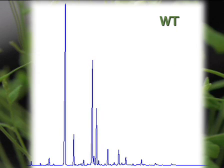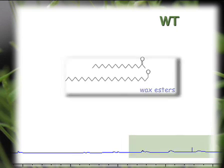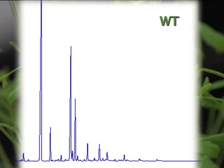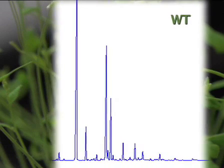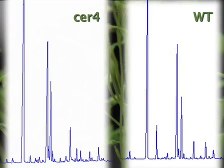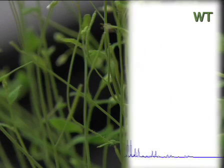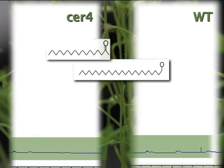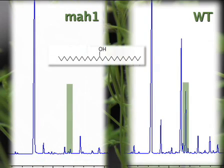The minor peaks are the primary alcohols and aldehydes. The area under the peaks, relative to standard, tells us how much of each compound is present. Here are the chromatograms for the plant lines that Patricia just showed us. Notice how CER4 lacks the primary alcohols and esters, while MAH1 lacks secondary alcohols and ketones.